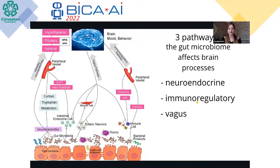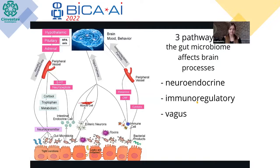Tryptophan is a precursor of serotonin and melatonin, which are the two main sleep-regulating hormones. The immunoregulatory pathway is where immune cells in the gut detect pathogenic microorganisms, causing these cells to secrete pro-inflammatory cytokines that travel along the bloodstream and can cause inflammation throughout the body. Sometimes pathogenic bacteria produce neurotoxic metabolites that travel to the brain and can damage molecular processes, affecting mood, circadian rhythm, and worsening insomnia.